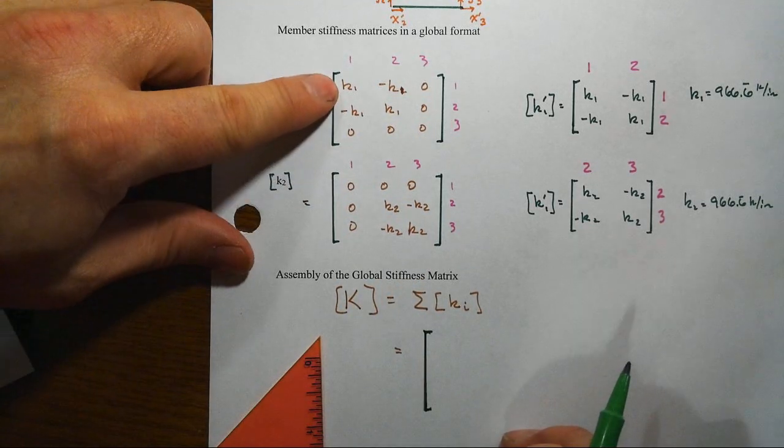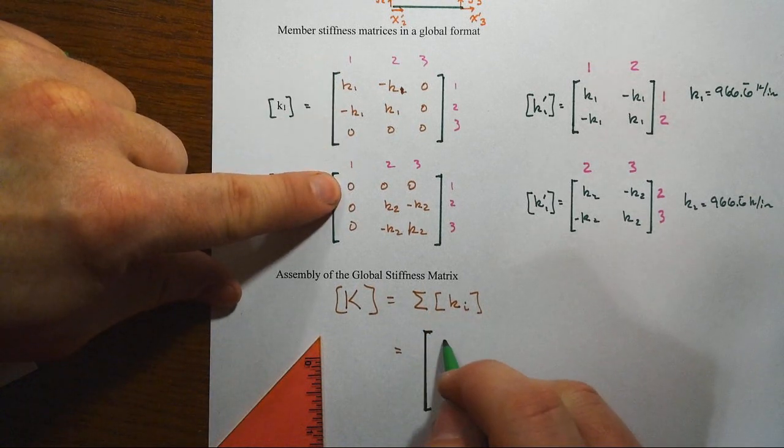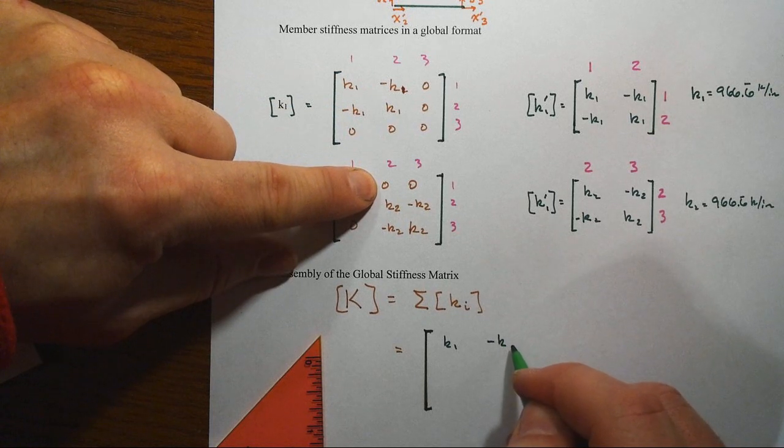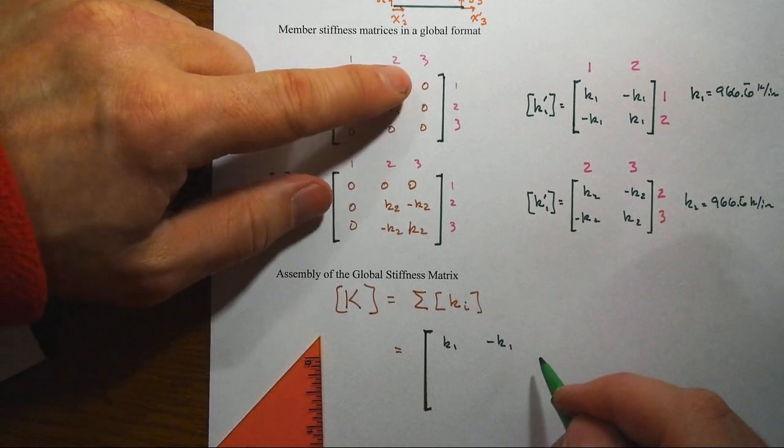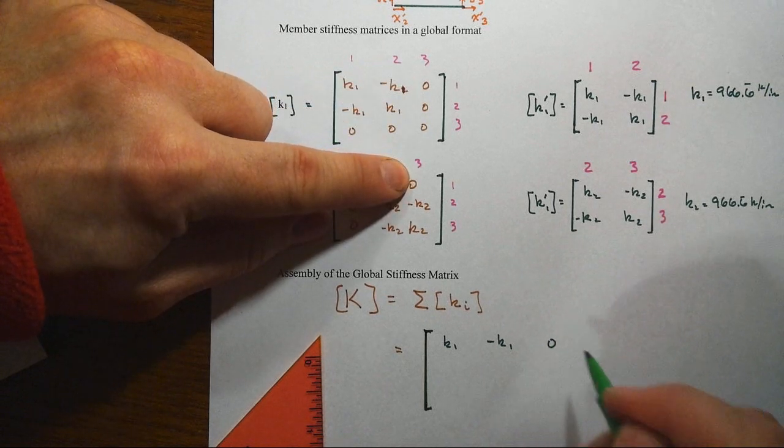That we take this entry here plus that one, which is still K1. That one plus that one, that sum is also K1, negative K1. And zero plus zero is zero.